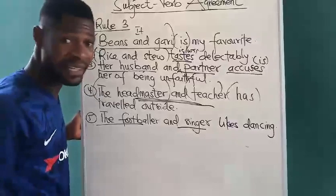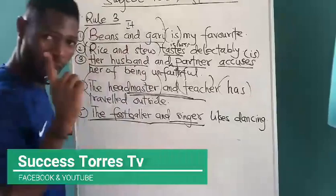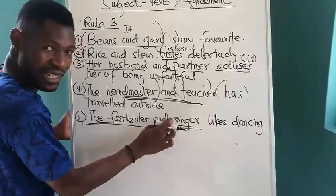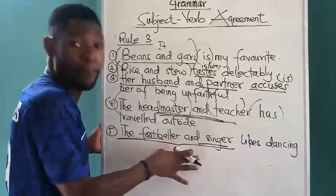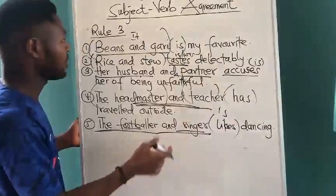'The footballer and singer likes dancing.' Asamoah Gyan is now a musician apart from being a footballer — he likes dancing. So 'the footballer and singer likes' — it is different from saying 'the footballer and the singer', where the footballer becomes Asamoah Gyan and the singer becomes Castro. But we don't have 'the' or any determiner here. Therefore, this singer and footballer is referring to one person. The verb becomes singular. That is about the third rule: a compound subject that acts as a singular subject takes a singular verb.